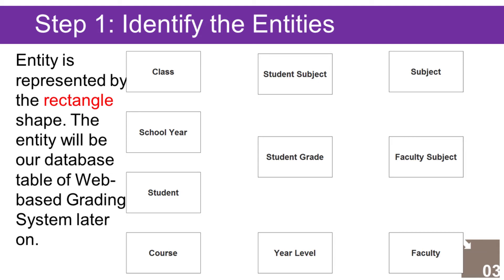Entity is represented by the rectangle shape. The entity will be our database table of the web-based grading system later on. In the web-based grading system we have the following entities: 1. Class, 2. School Year, 3. Student, 4. Course, 5. Year Level, 6. Student Subject, 7. Student Grade, 8. Subject, 9. Faculty Subject, 10. Faculty.